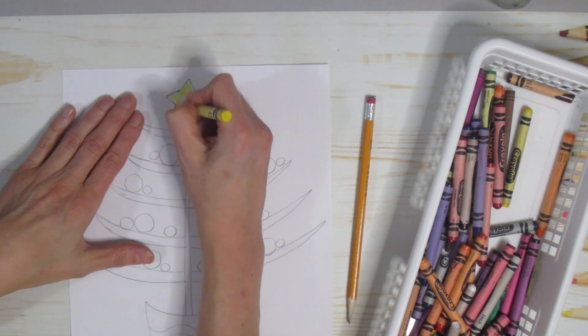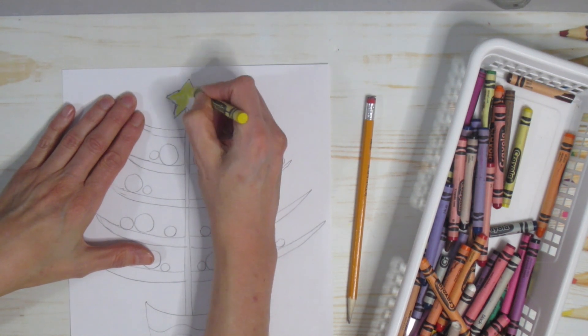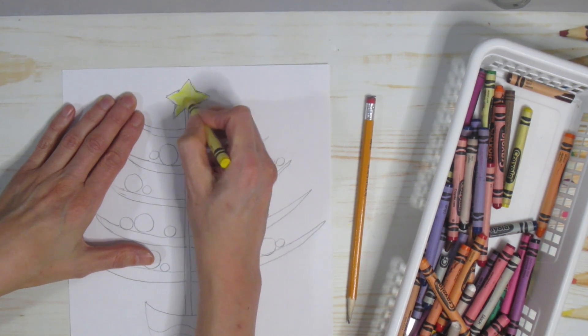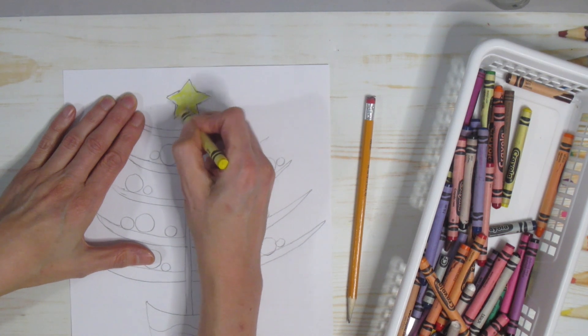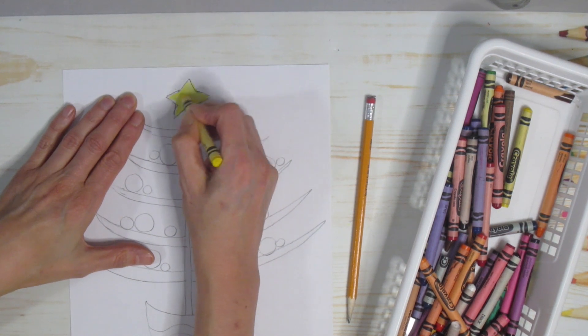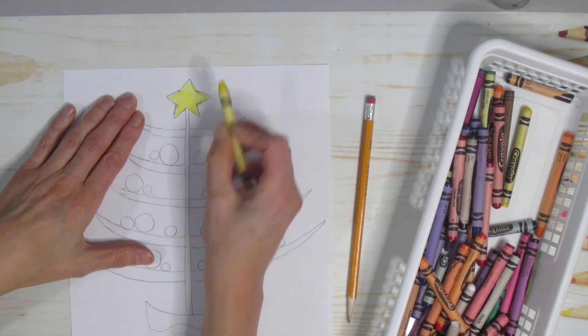But all I'm going to do is go ahead and color everything in. When you are coloring or painting or using marker, you do want to try to get in and make sure there aren't any white spots. That will just make everything look a little bit nicer. Color away.